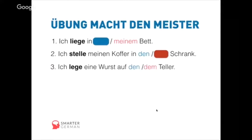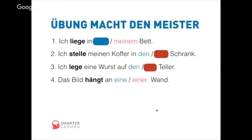'Ich lege eine Wurst auf den oder dem Teller' — I put the sausage onto my plate. If you put it there, it is an action, hence you need the accusative: den Teller. Next: 'Das Bild hängt an eine oder einer Wand' — the picture hangs on a wall. If it's already hanging there, it's a position, so you need the dative: einer Wand.